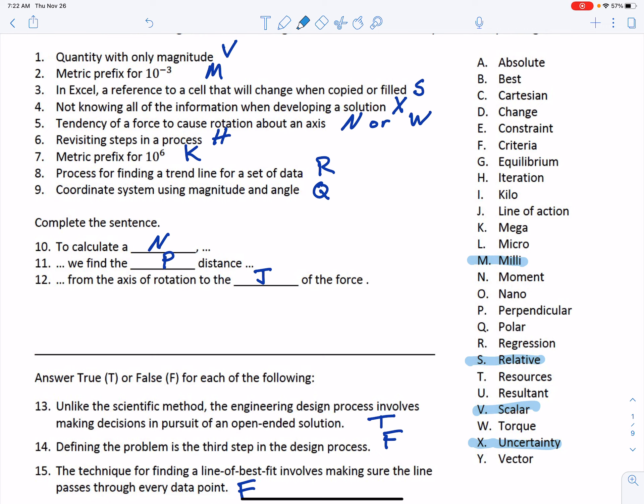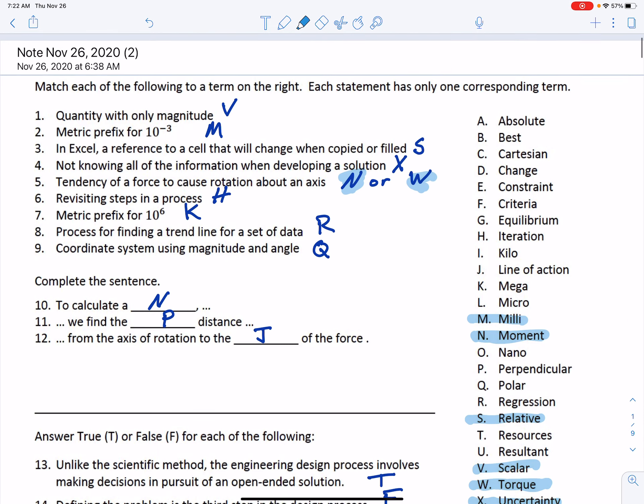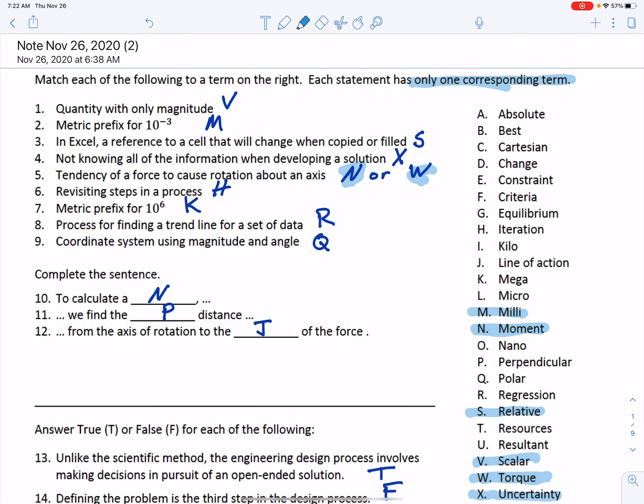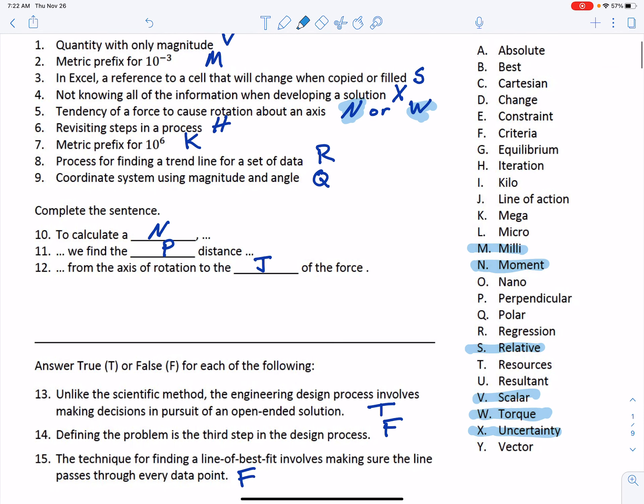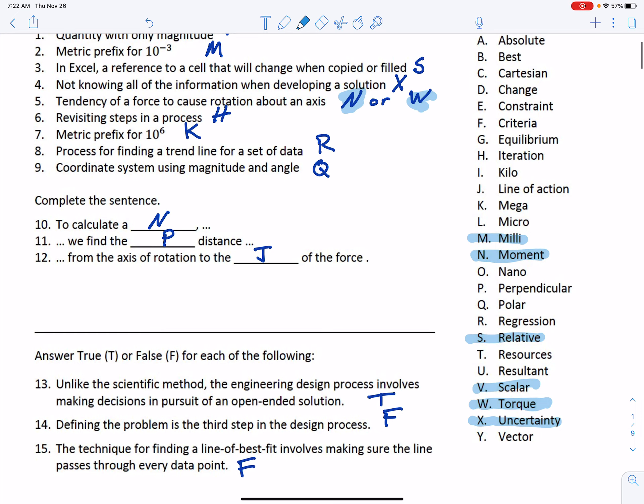Number five: the tendency of a force to cause rotation about an axis. I agree there's some ambiguity here. I think N and W—N is moment and W is torque—both those are valid answers. Later on you could eliminate one of those if you know, I think the problem said there's only one corresponding term, so you could have narrowed it down to just one answer. But you know, we'll go with it, I gave you credit for that.